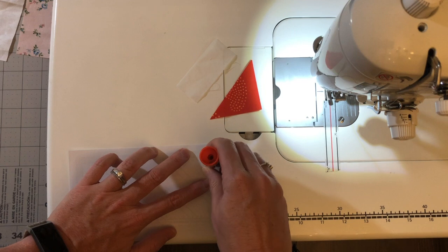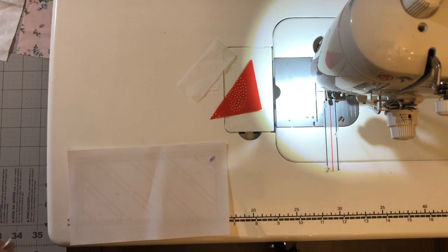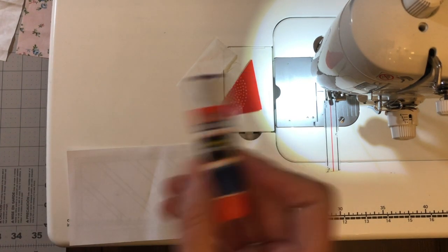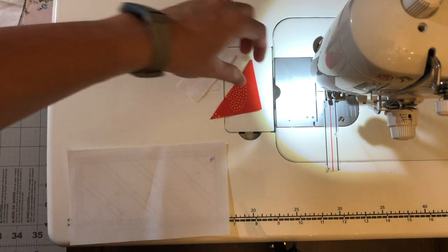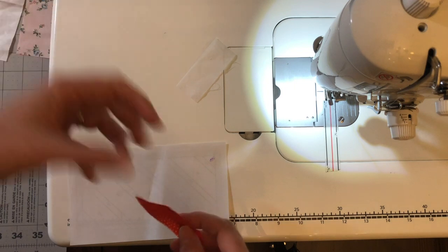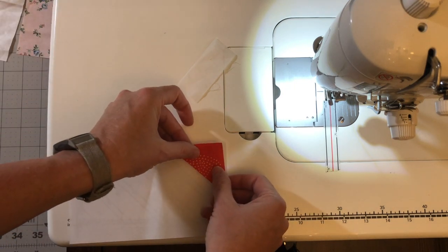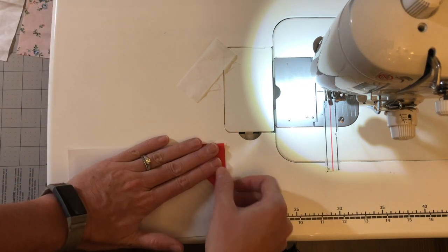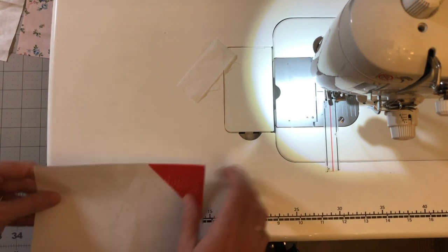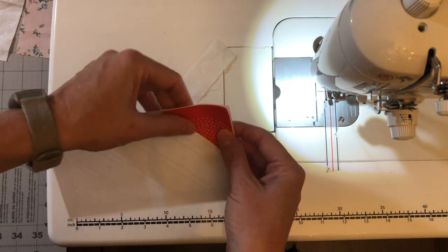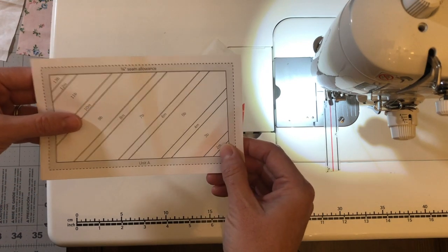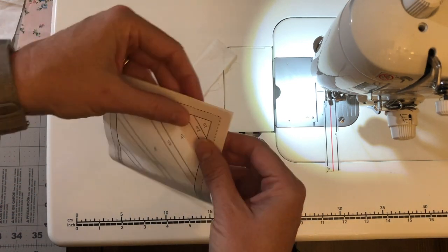So first thing I'm going to do, remember this is going to be where the right side of the block is. I just flipped it over. So here's my first piece. Here it is. I'm going to put just a tiny dab of glue there. This is Elmer's washable school glue. You can use pretty much whatever you have as long as it's washable. You can use a fabric glue pin. You can also use a straight pin. But I'm going to put this piece here. I'm going to put this piece right side up on the wrong side of the paper.